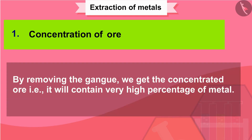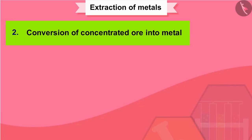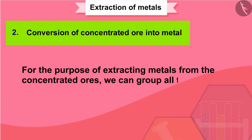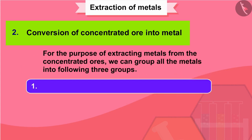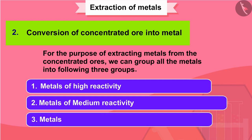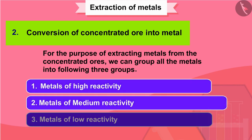By removing the gangue, we get the concentrated ore. That is, it will contain a very high percentage of the metal. Conversion of concentrated ore into metal: for the purpose of extracting metals from the concentrated ores, we can group all the metals into the following three groups: metals of high reactivity, metals of medium reactivity, and metals of low reactivity. We will now discuss each of the three categories one by one.